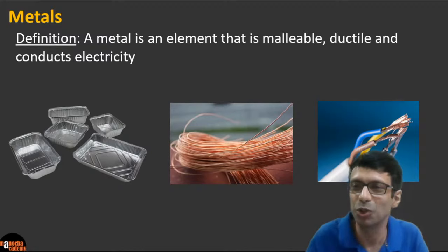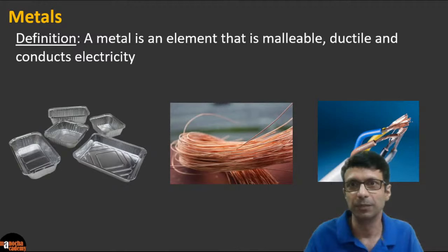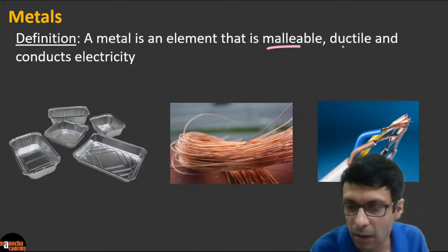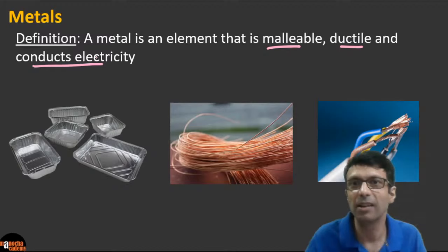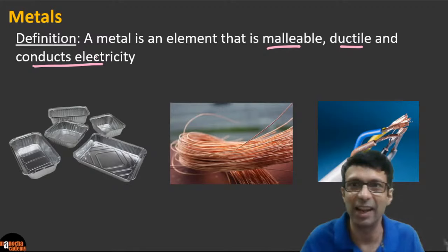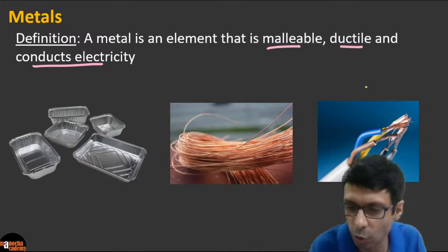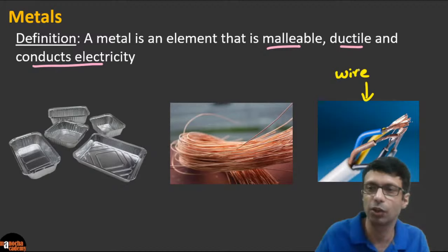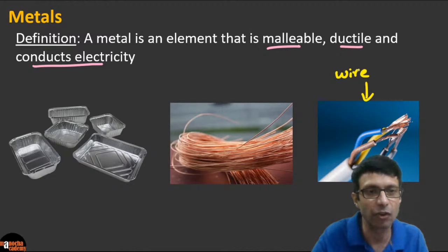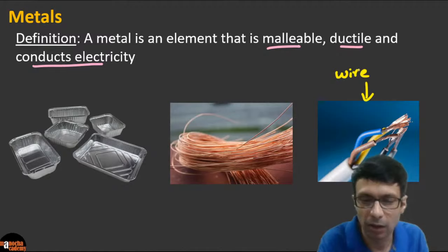A metal is an element that is malleable, ductile, and conducts electricity. You know what 'conducts electricity' means — the wires in your house are made of metals, and metals are good conductors of electricity. We'll now understand what 'malleable' and 'ductile' mean.